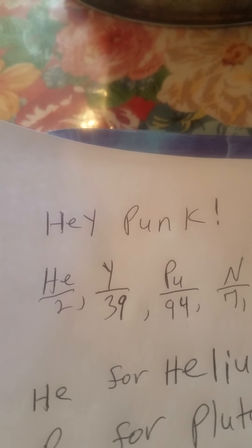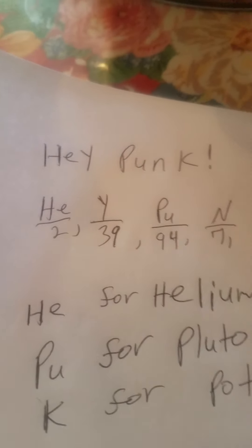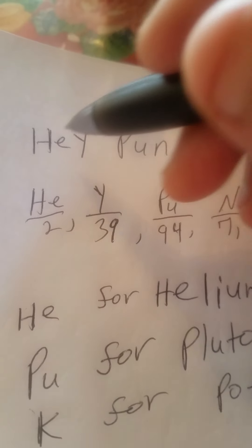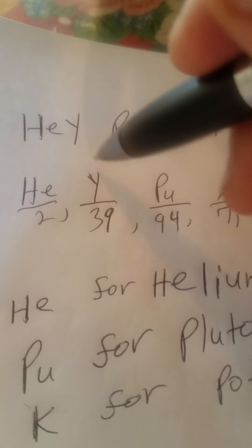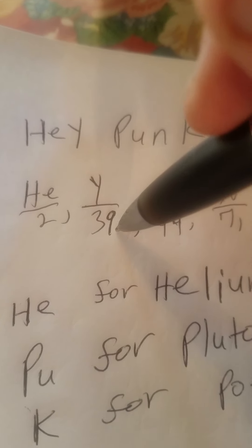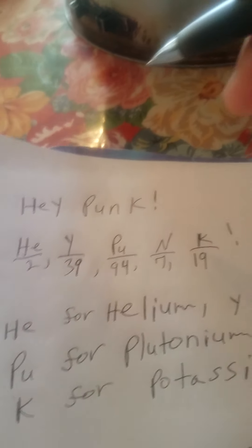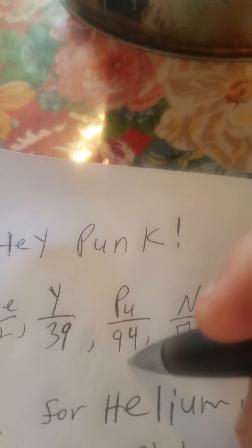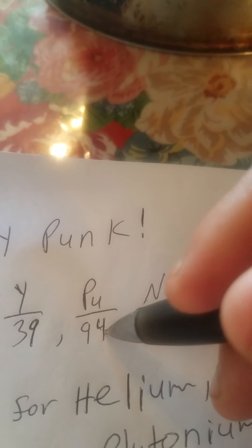You can use 'Hey punk!' to remember the periodic table of elements — the chemical symbols and atomic numbers. You've got 'Hey': capital H and small e for Helium, which is atomic number 2. Capital Y for 'Hey,' which is Yttrium — atomic number 39. All the element names will be put down in the description box below.